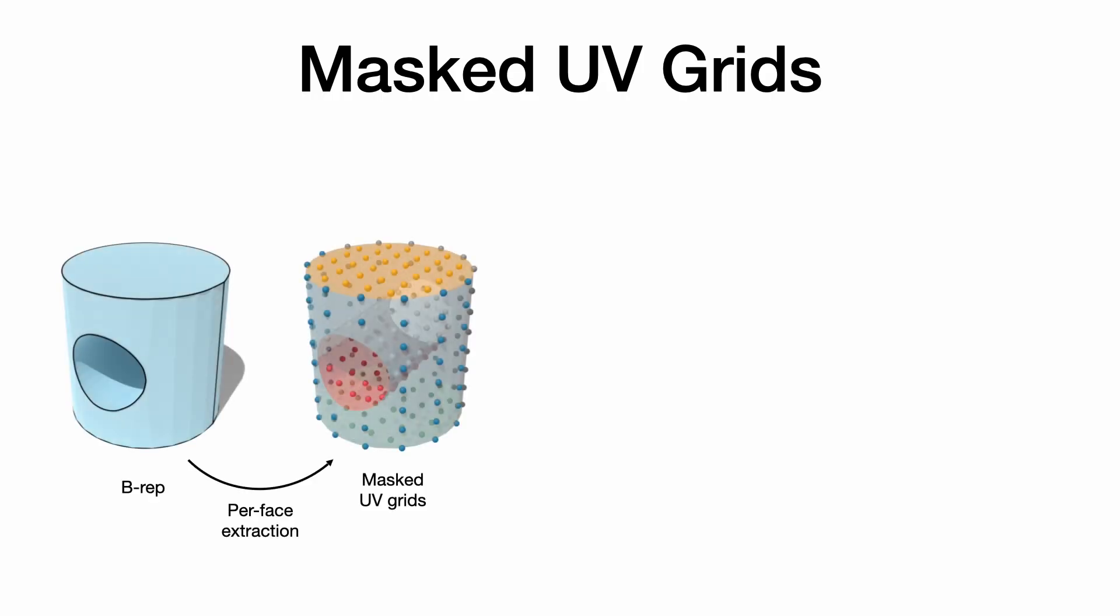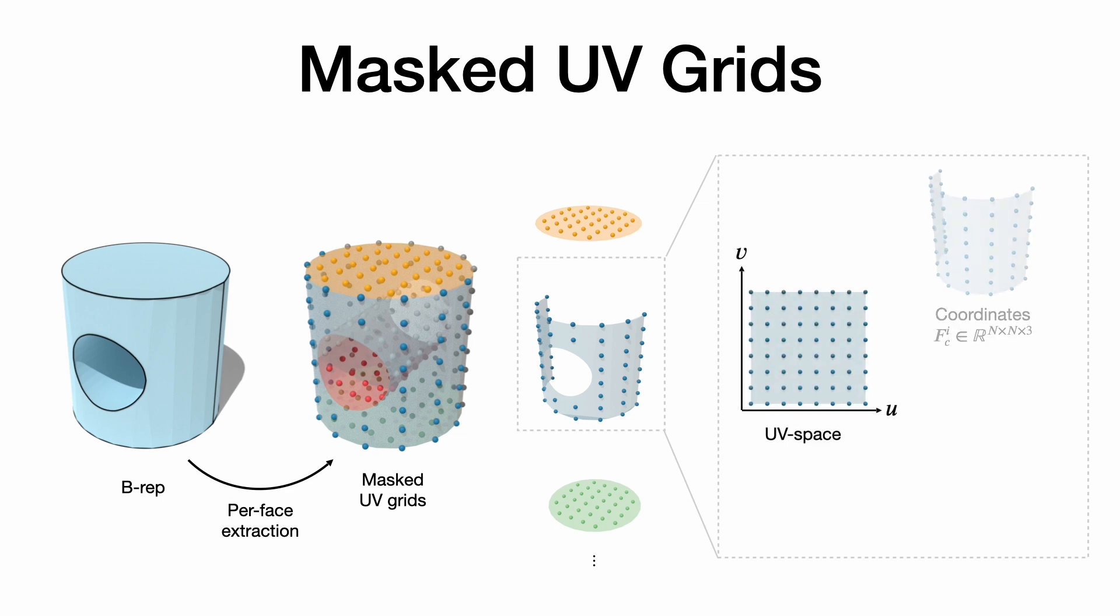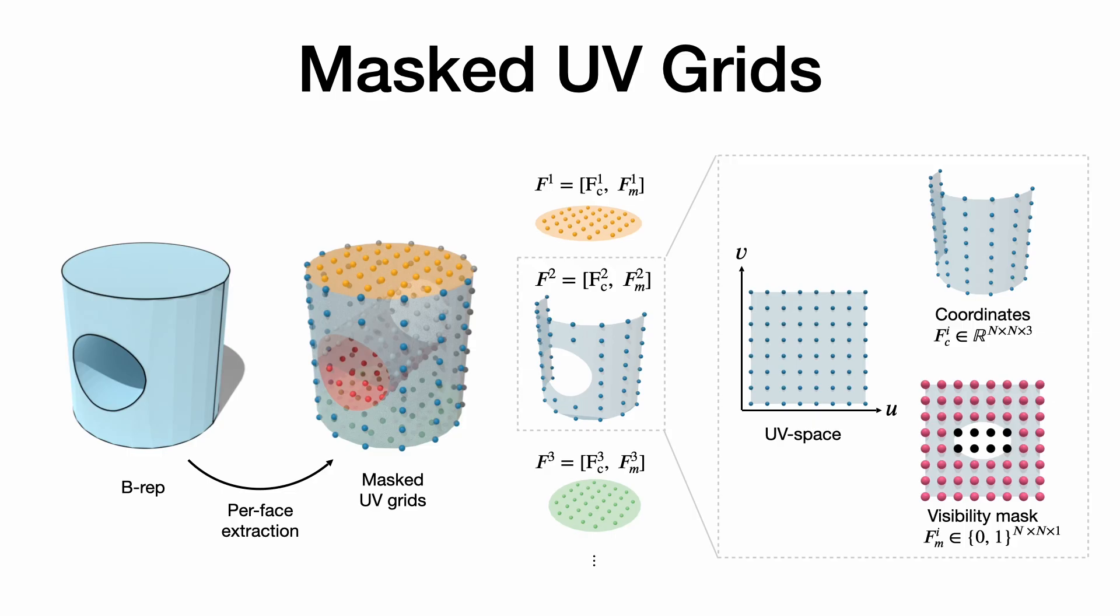Our key insight is that the full topology of a solid can be inferred directly from its faces alone. Concretely, we represent shapes as masked UV grids. Masked UV grids model individual faces as structured grids of points obtained by sampling surfaces in their UV space. In addition to coordinates, a visibility mask provides additional information about the topology—for example, the hole in this cylinder.